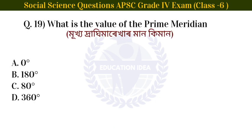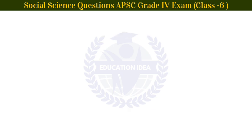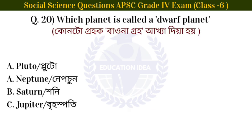Next question: what is the value of the prime meridian? Option: 0 degrees — the value of the prime meridian is 0 degrees.